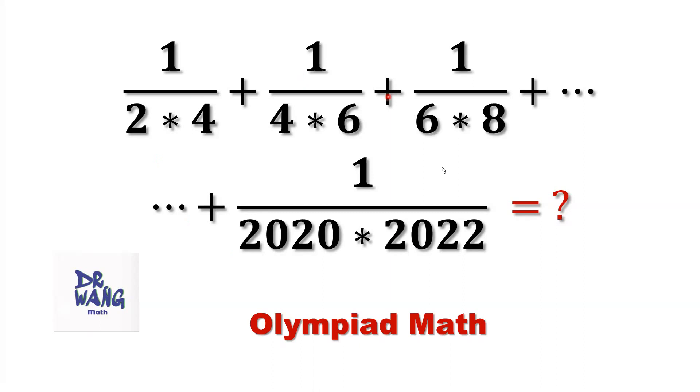From this given summation, we can see two things. First, for each term, the denominator is a product of two consecutive even numbers.